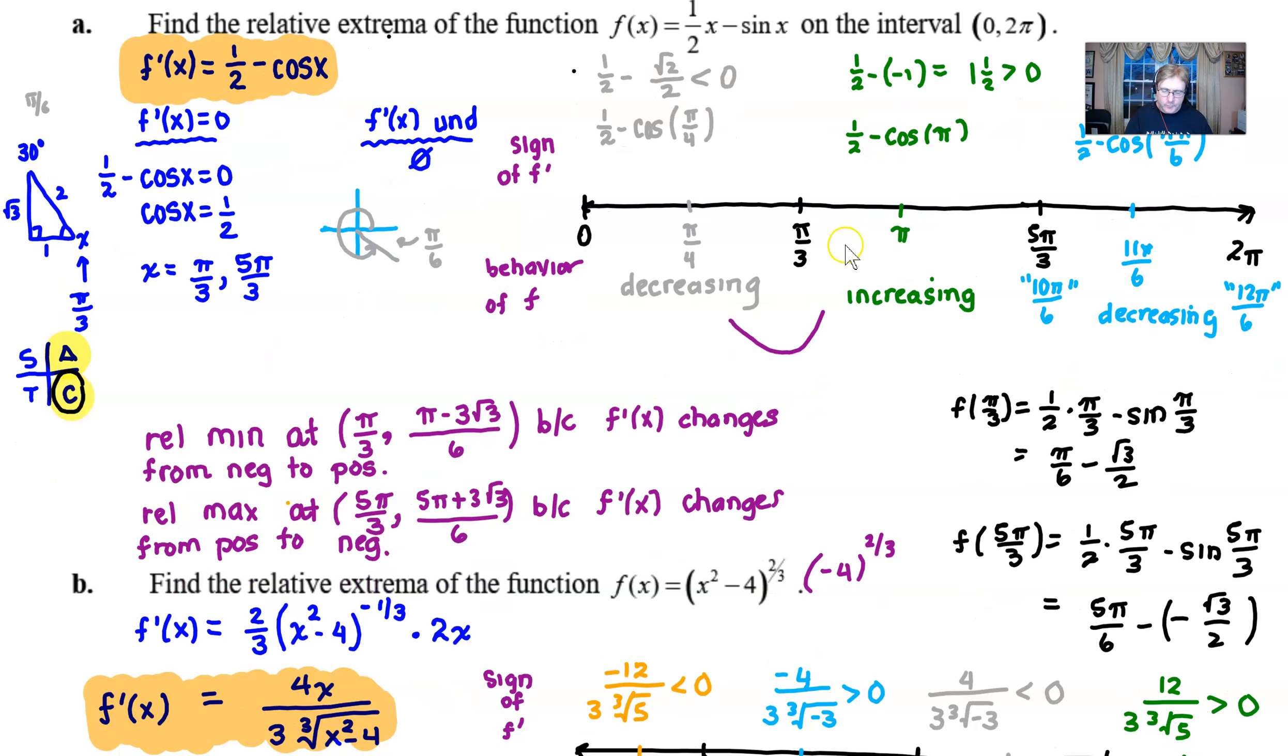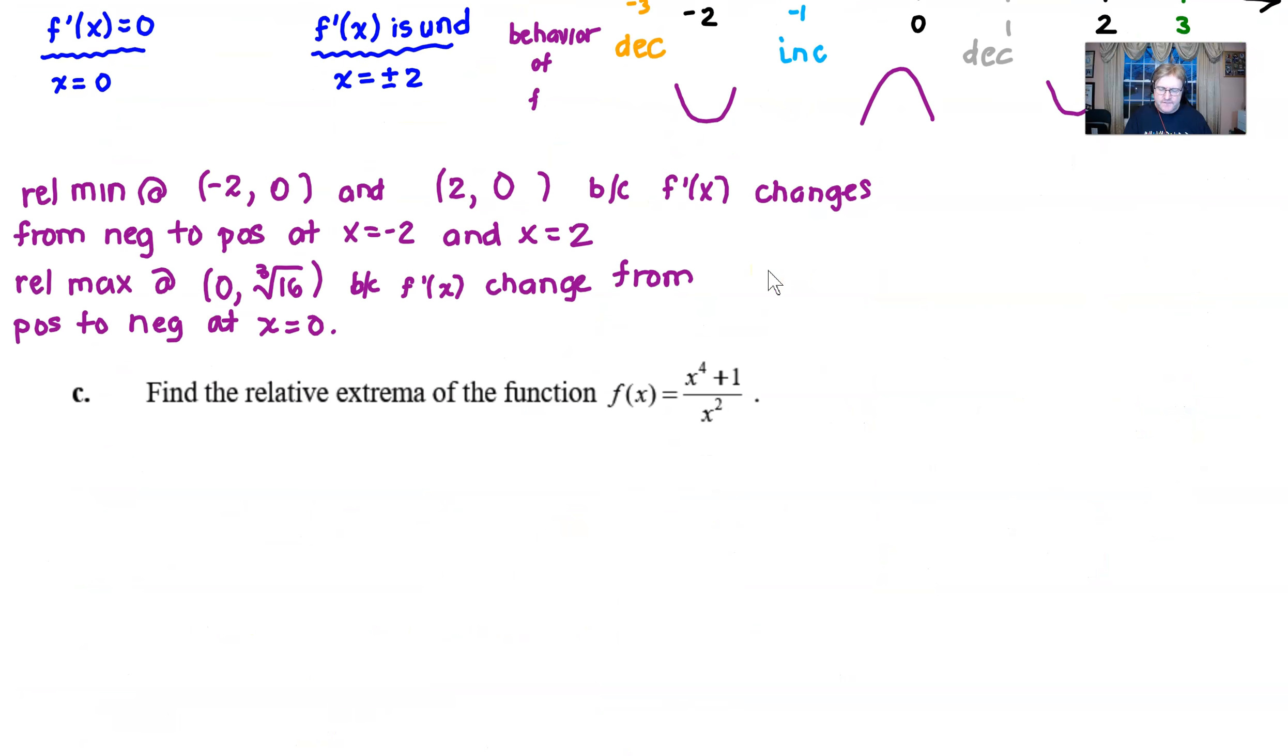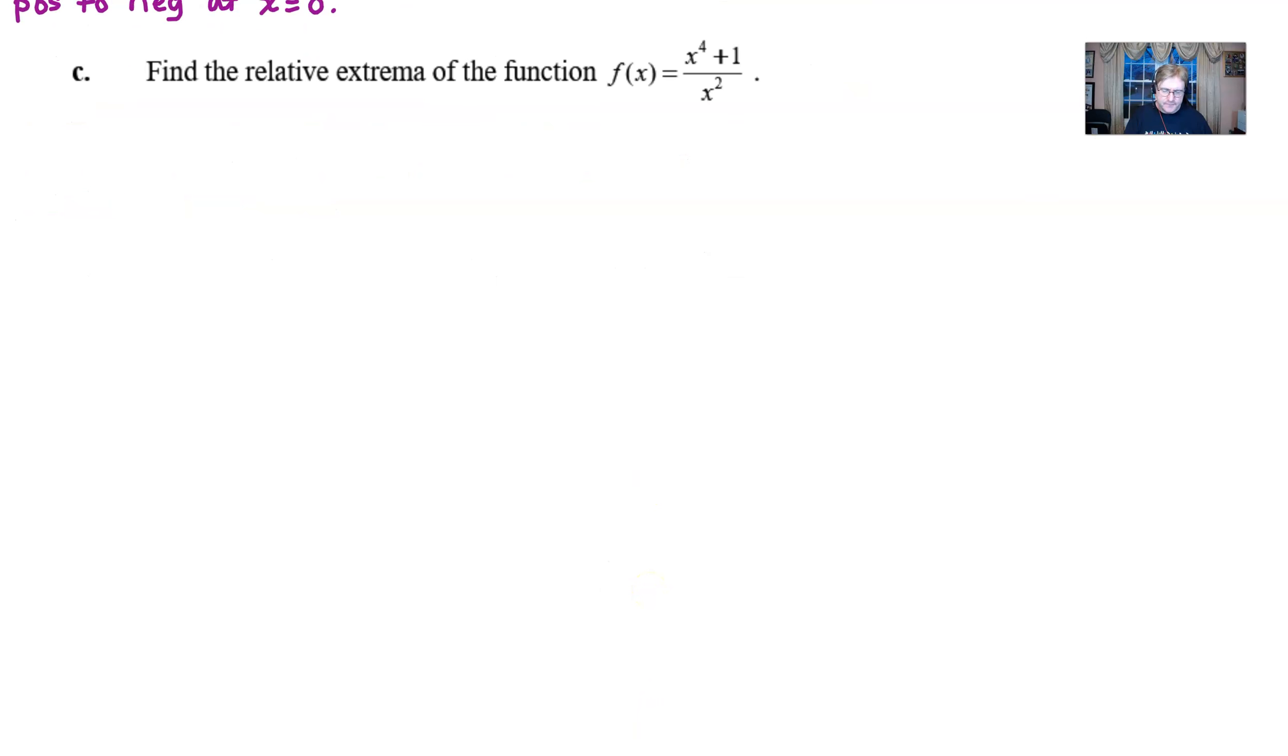Each one a little bit different. One of them had a trig function in part A. Part B was this kind of unusual function with this two-thirds exponent, and then we're going to finish up with our part C, which is a rational function x to the fourth plus one over x squared.